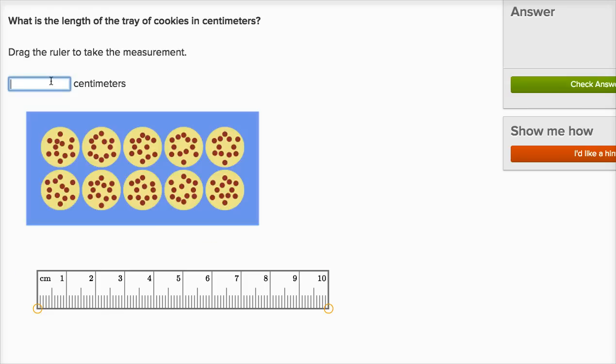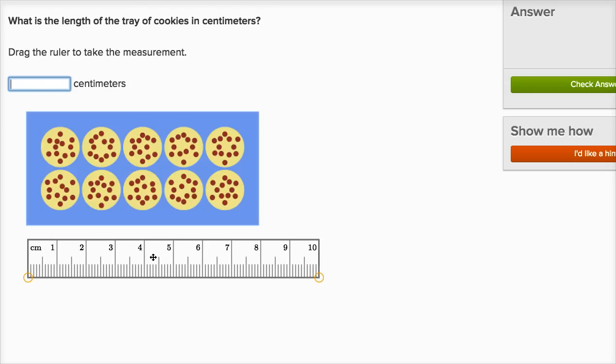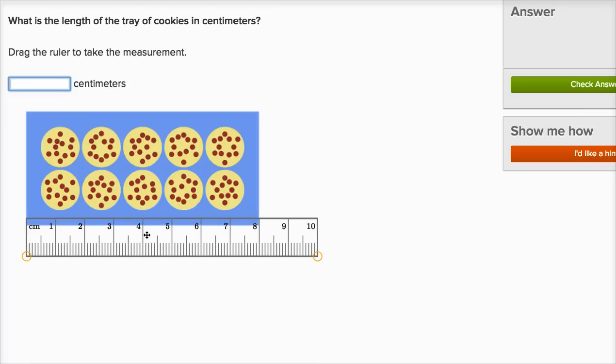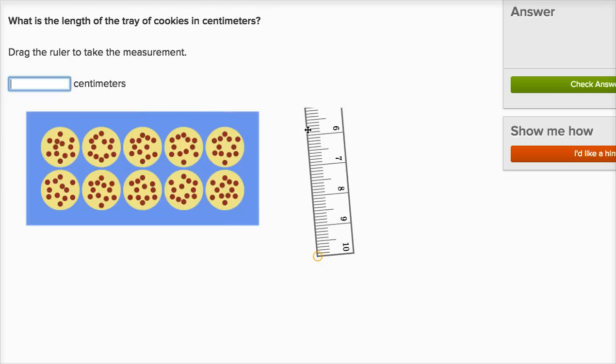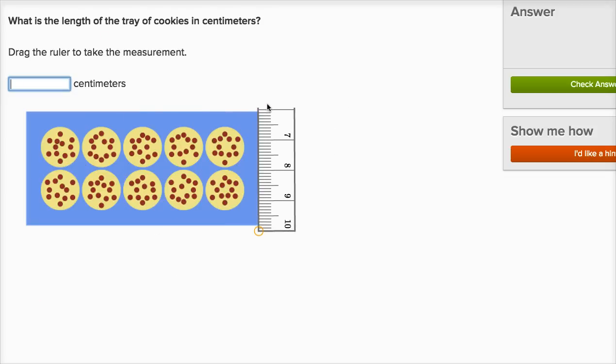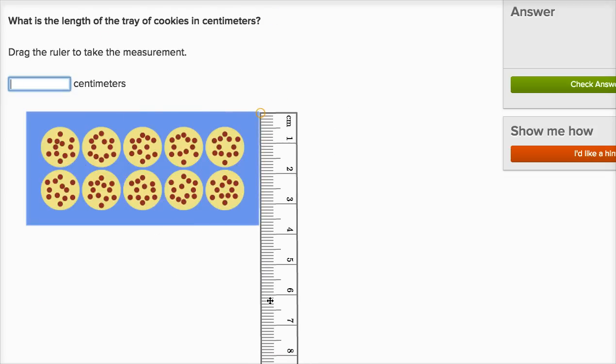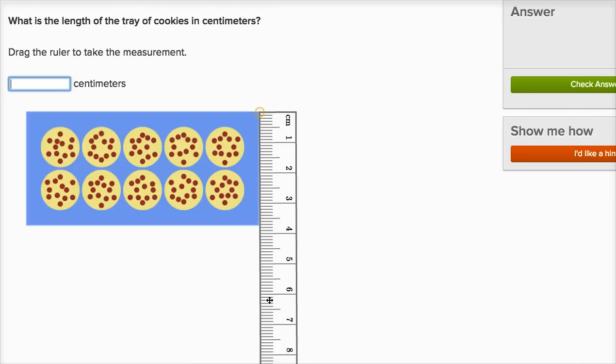What is the length of the tray of cookies in centimeters? And when they say length, they mean the, length actually means the longest dimension, if you have a width and a length. And so the longest dimension of a tray of cookies is going to be this side right over here. You don't want to measure that side up there. That would not be the length. The length, if people don't tell you otherwise, it's the longest dimension.